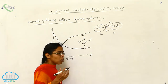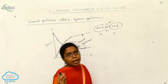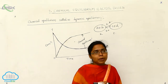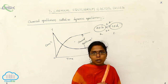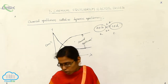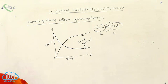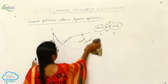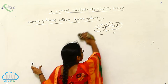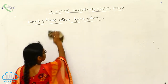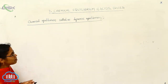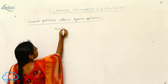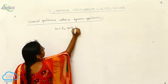Dynamic equilibrium is also applicable for Haber's process, ammonia preparation, and it is also applicable for hydrogen iodide preparation. For hydrogen iodide preparation, the reaction is: H₂ + I₂ gives 2HI.